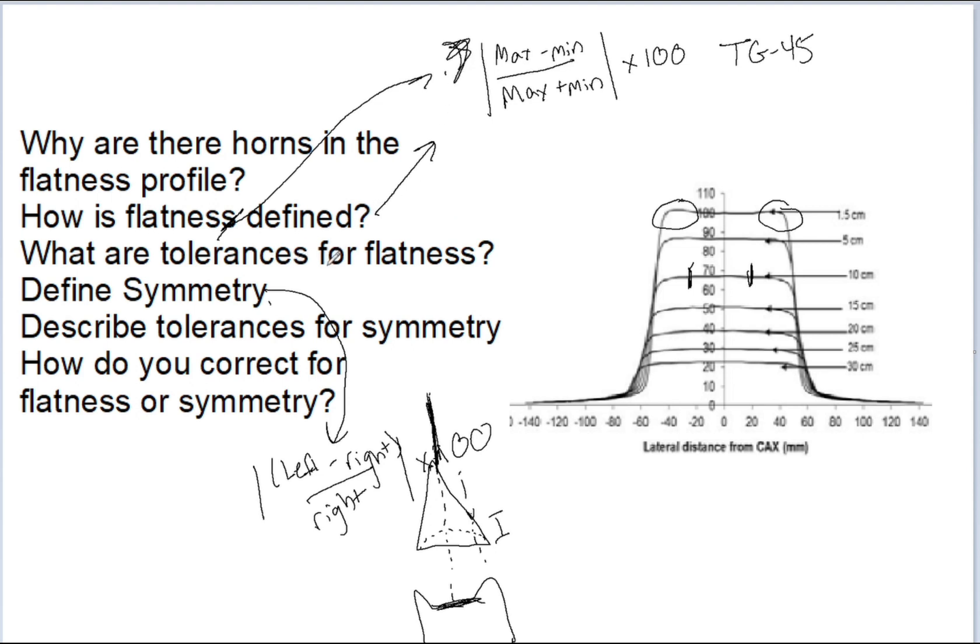Also, for the tolerances, it's good to know what the baselines are. You may look in TG-142, and it just says plus or minus 3%. Well, 3% of what? Does that mean 3% symmetry? No. It's 3% of your baseline value. That is important as well. Something they could definitely ask you further.